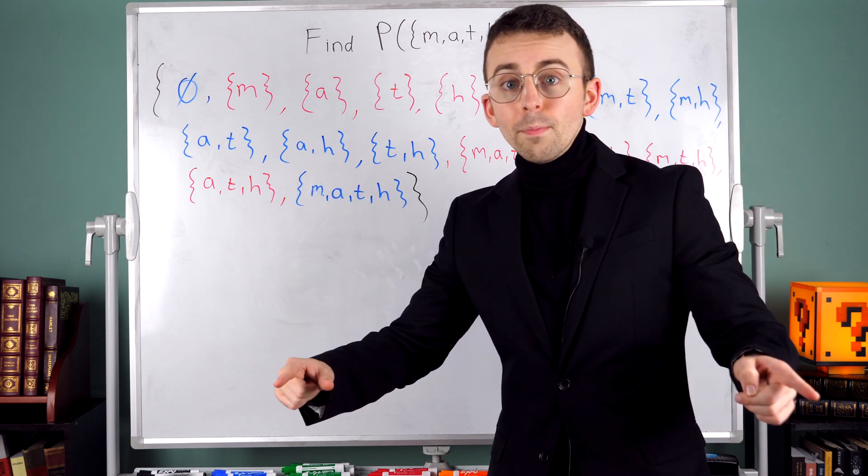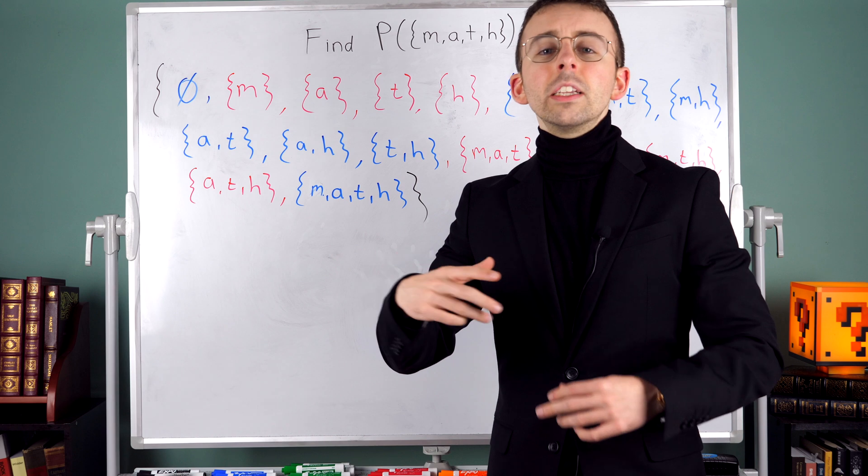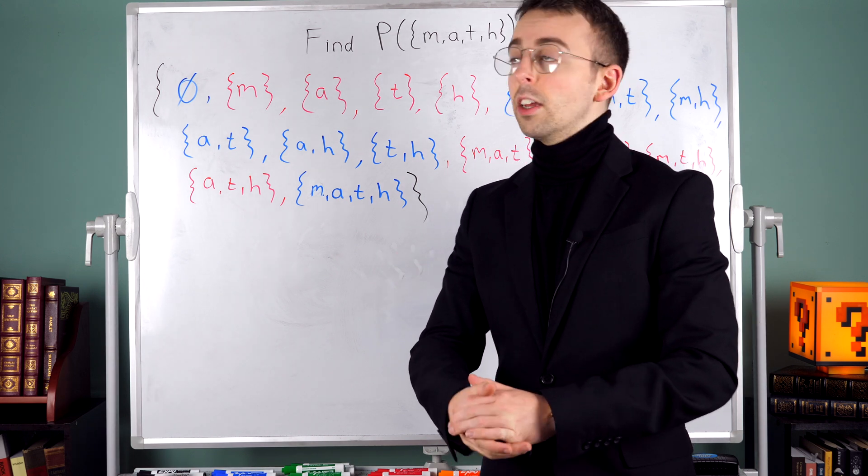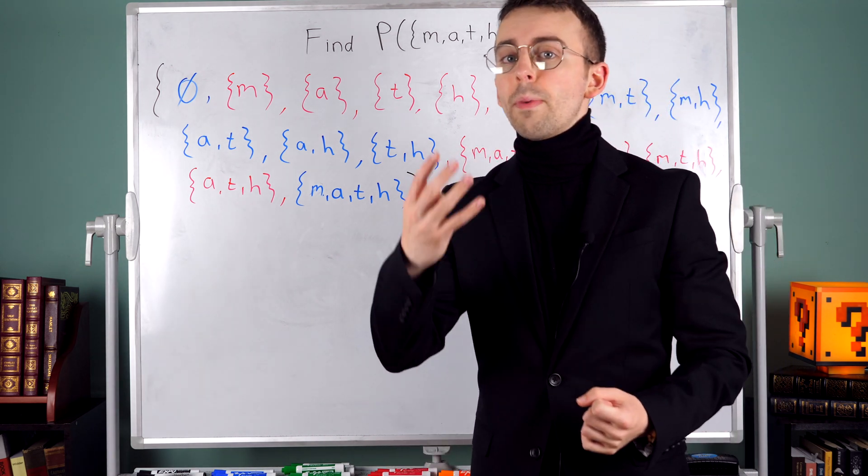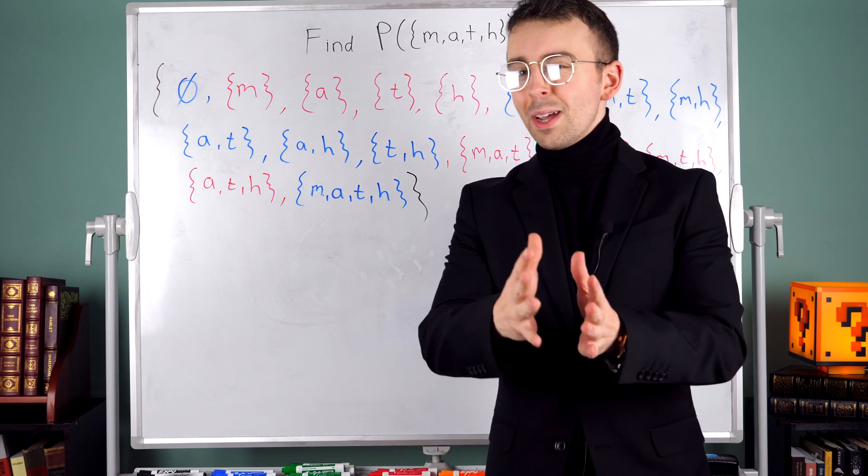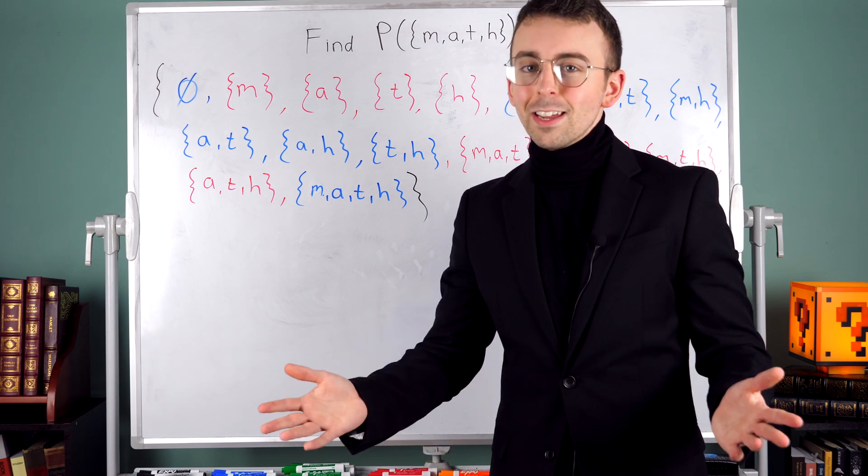Then you just want to write out all of the subsets in an orderly fashion so that you don't miss any. Put them all in one big set and count them to make sure they match that, what was in this case 2 to the power of 4 number, to make sure that you didn't miss any of the subsets.